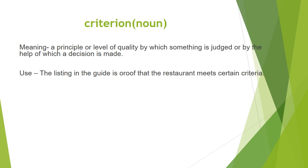Criterion: noun, meaning a principle or level of quality by which something is judged or by which a decision is made. Using sentence: the listing in the guide is proof that the restaurant meets certain criteria.